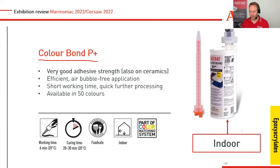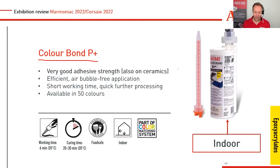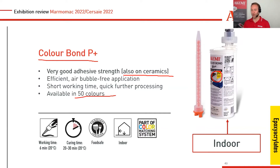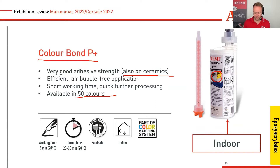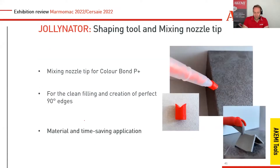Color bond is not new — you already know this product. It is for the indoor mitre bonding of countertops, vanity tops, etc. Whether you use the stone fabricator technique or the tile layer technique, color bond is the right product. With our P+ version, we have 50-plus percent bonding power on ceramics, available in 50 colors. What is new is making the mitre application easy, fast, and clean — creating a massive look without afterwork — and for that we have our Jollinator system.